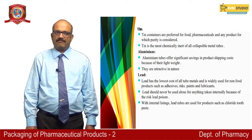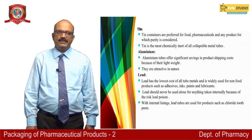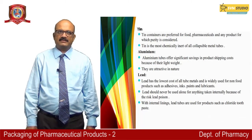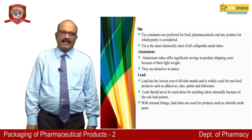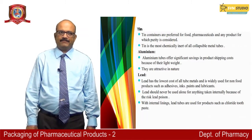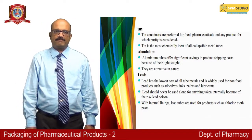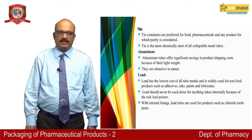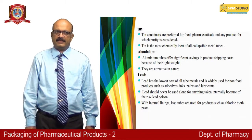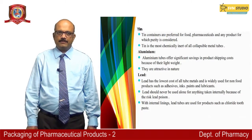Tin is the most chemically inert of all collapsible metal tubes. Aluminium tubes offer significant savings in product shipping costs because of their lightweight and are attractive in nature. Lead has the lowest cost of all tube metals and is widely used for non-food products such as adhesives, inks, paints and lubricants. Lead should never be used alone for anything taken internally because of the risk of lead poisoning. With internal linings, lead tubes are used for products such as chloride toothpaste.